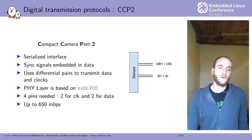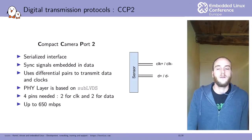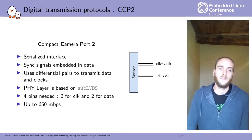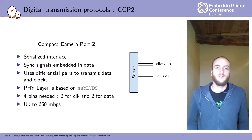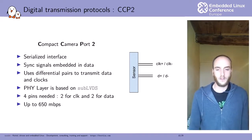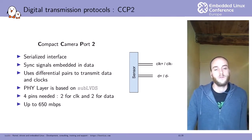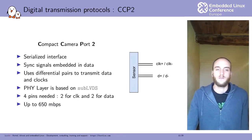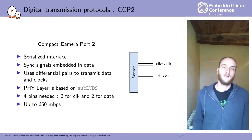Another widely used interface is the Compact Camera Port 2 (CCP2), a serialized interface where data is sent one bit after another. Unlike the parallel interface, HSYNC and VSYNC synchronization are embedded into the data. It uses a basic clock lane with differential pairs and only a single data lane — just four physical lines to connect your sensor to the CPU. However, it is limited in bandwidth, going up to only 650 megabits per second.